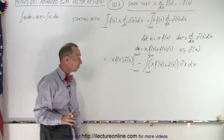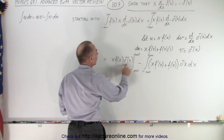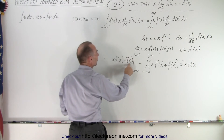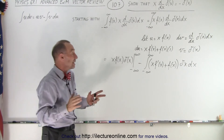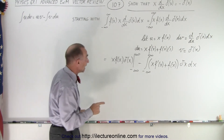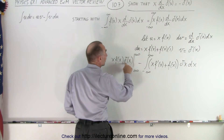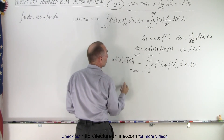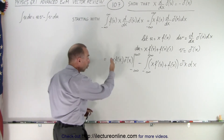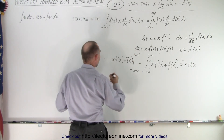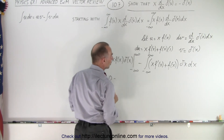Let's evaluate this. When we plug in the upper limit, we get delta of infinity. The delta function only has any meaning other than zero when x equals zero, so delta of infinity is simply zero. Delta of negative infinity is zero as well. So this whole boundary term simply becomes zero, giving us zero minus the integral.